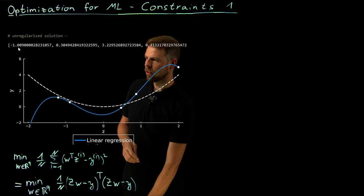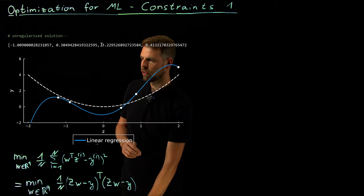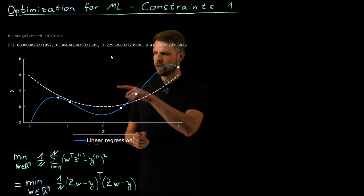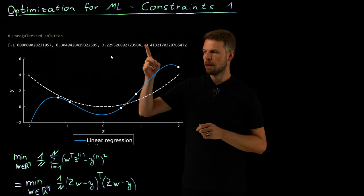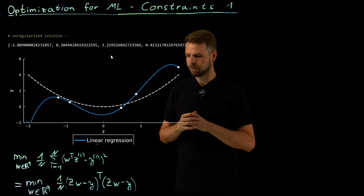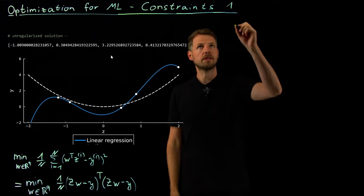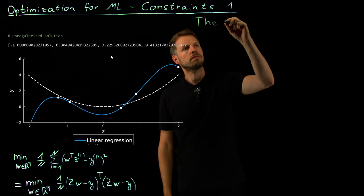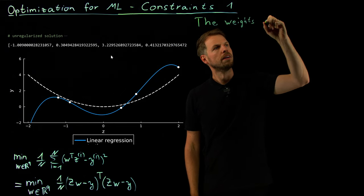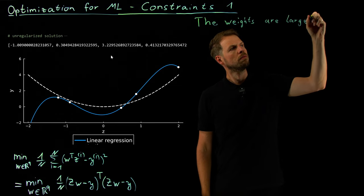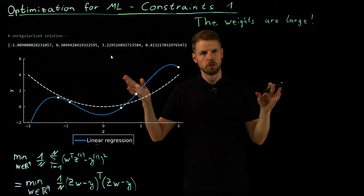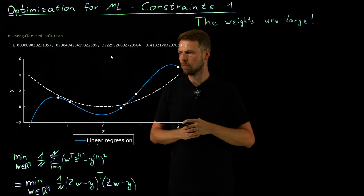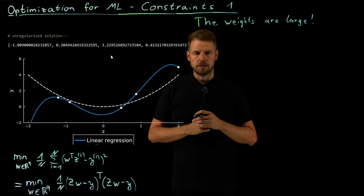Now if you look at the weights here, this is a vector of the weight values, you see that the quadratic term has a very high value and the later ones also have higher values, which means that in order to fit all these points or more importantly to fit the noise of these points, which is not what we want, we get very high parameter values for these constraints. And so here's the issue or the statement that we can deduct from this: the weights are large. Not in general obviously, but for this example, what we see clearly the quadratic term has a factor of three in front of it, which is a lot more obviously than the one.